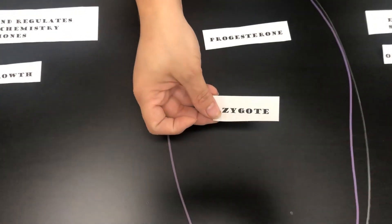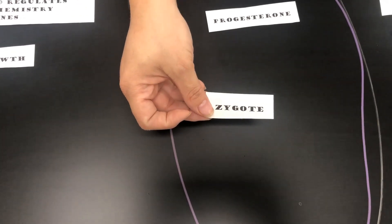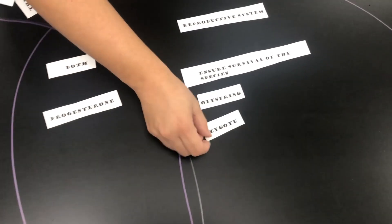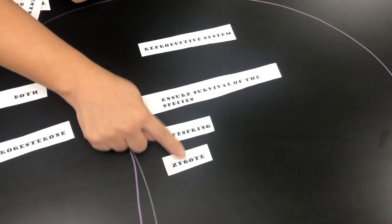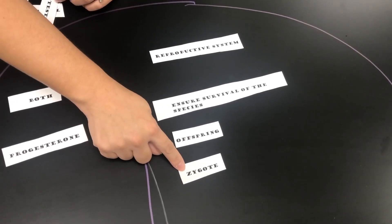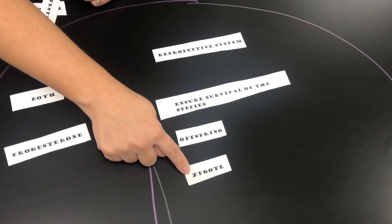Zygote. Zygote was a term that we covered in the reproductive system notes. It's kind of like an offspring. It's before a baby is born, the very beginning stages of reproduction.